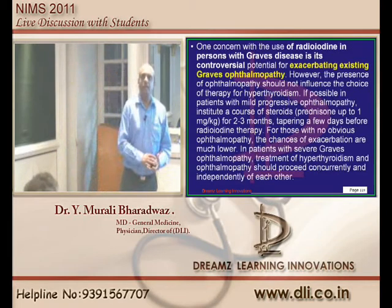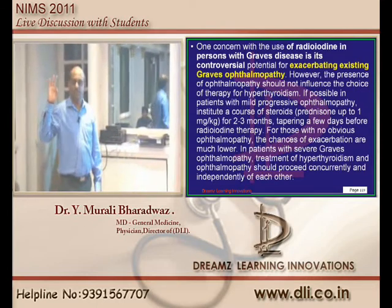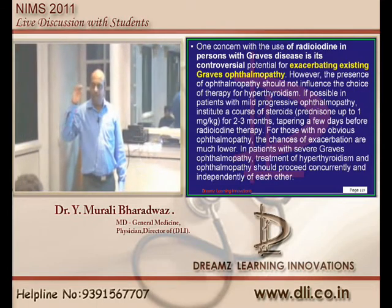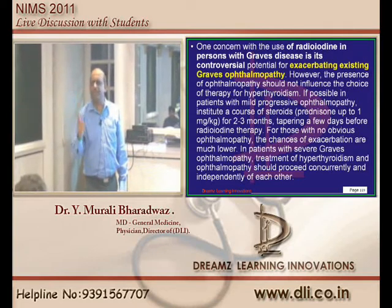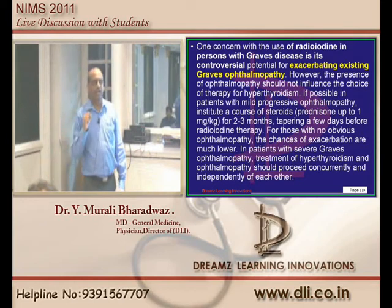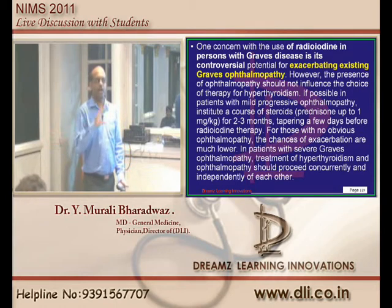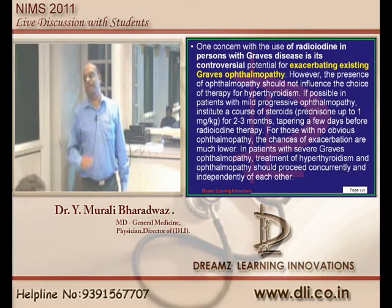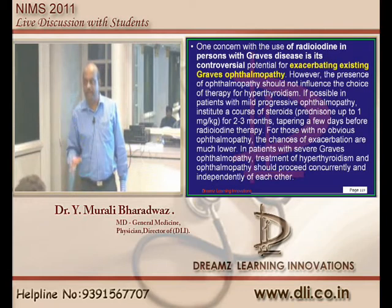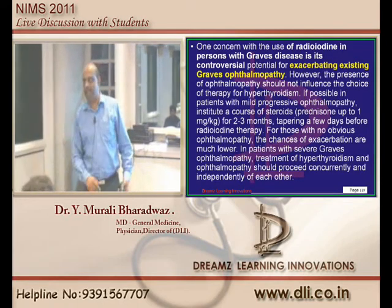Remember: Hashimoto's thyroiditis, Graves disease, De Quervain's thyroiditis - these are all topics you have to be 200 percent sure about. Know the radioactive iodine uptake: where it is increased, where it is diffusely increased, where it is decreased, and what type of antibodies are positive in each condition. There are around 800 topics which you have to study before you are ready for any entrance exam.